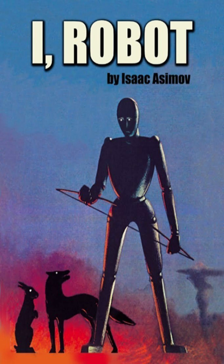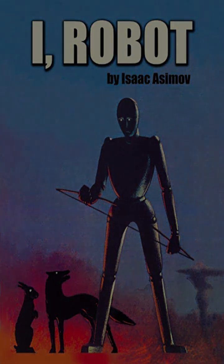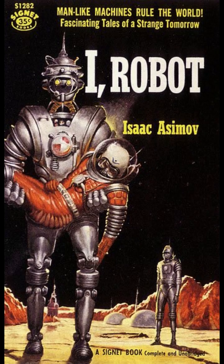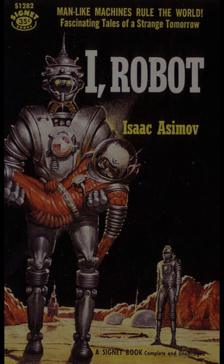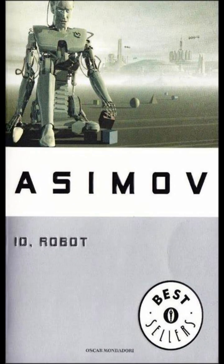In The Evitable Conflict, Asimov addresses the theme of a robot's role in managing and optimizing human society. The story presents a future where supercomputers, governed by the three laws, manage global affairs with the goal of achieving human prosperity. This narrative explores the trust placed in advanced artificial intelligence to govern complex systems and the implications of such trust on human autonomy and decision-making.